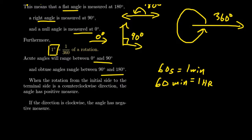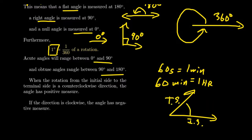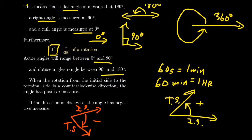Degree measure is essentially our native language when it comes to angle measurement. That doesn't mean it's necessarily the best or easiest to use — it's just the one we have the most experience with, and so it feels familiar. Another thing we should mention about degree measure is the difference between clockwise and counterclockwise rotation. If you take a counterclockwise rotation from the initial side to the terminal side, this is considered a positive angle measurement. A clockwise rotation is considered a negative angle measure.